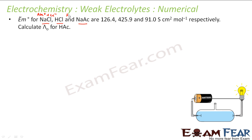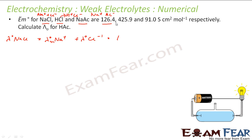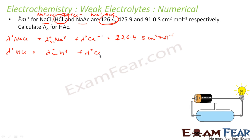NaCl will break into Na⁺ and Cl⁻, and NaAc will break into Na⁺ and Ac⁻. So λM⁰ of NaCl is nothing but λM⁰ of Na⁺ plus λM⁰ of Cl⁻, and that value is given as 126.4 S cm² per mol. Similarly, λM⁰ of HCl is λM⁰ of H⁺ plus λM⁰ of Cl⁻, and that is given as 425.9 S cm² per mol.